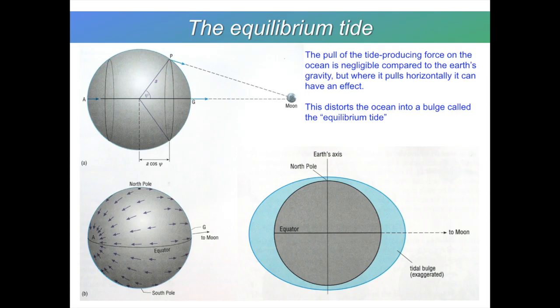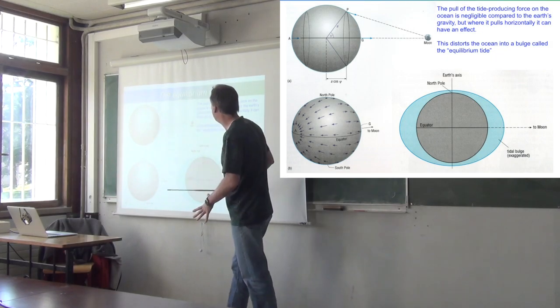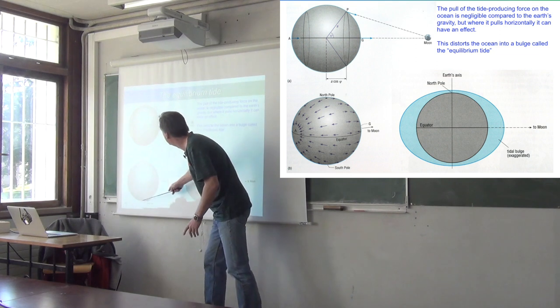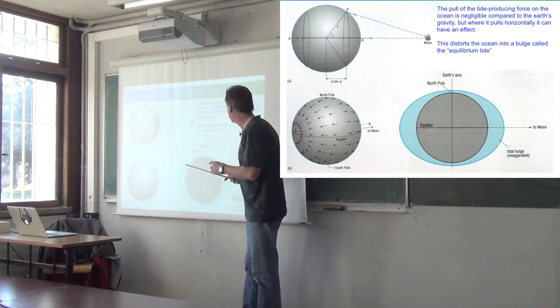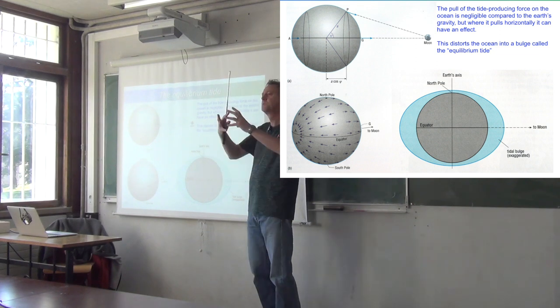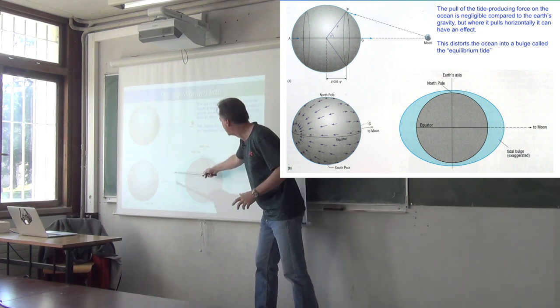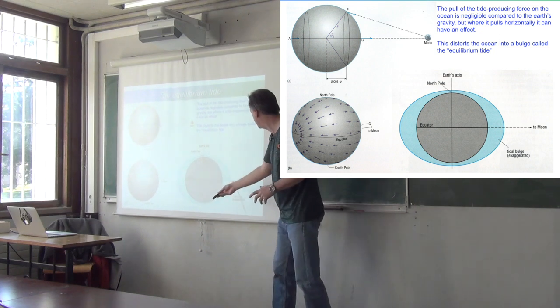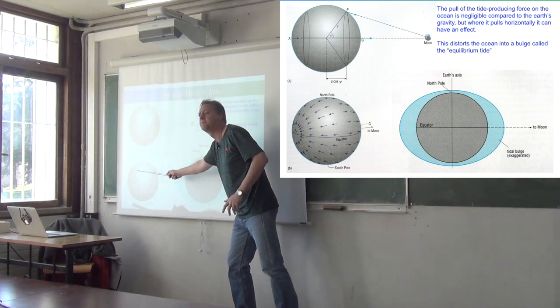So what's the effect of this tide generating force? So you've got, here's the Moon, here's the Earth. And all over the Earth you'll have these, you can draw these force arrows. So let's suppose that these force arrows will then displace the ocean into a new equilibrium shape, and it'll be this kind of oval shape. There'll be a lobe which is pointing towards the Moon and another lobe which is pointing away from the Moon.